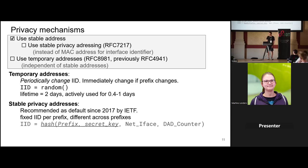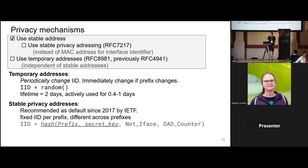Temporary addresses immediately change the interface identifier when you change prefix, to avoid any risk of correlation. The interface identifier for temporary addresses is generated completely randomly. Temporary addresses have a fixed lifetime of two days, but are actively used for new connections only for a random time of 0.4 to 1 day. The remaining time, the address is kept for potentially already-established connections, so as not to abruptly abort them.